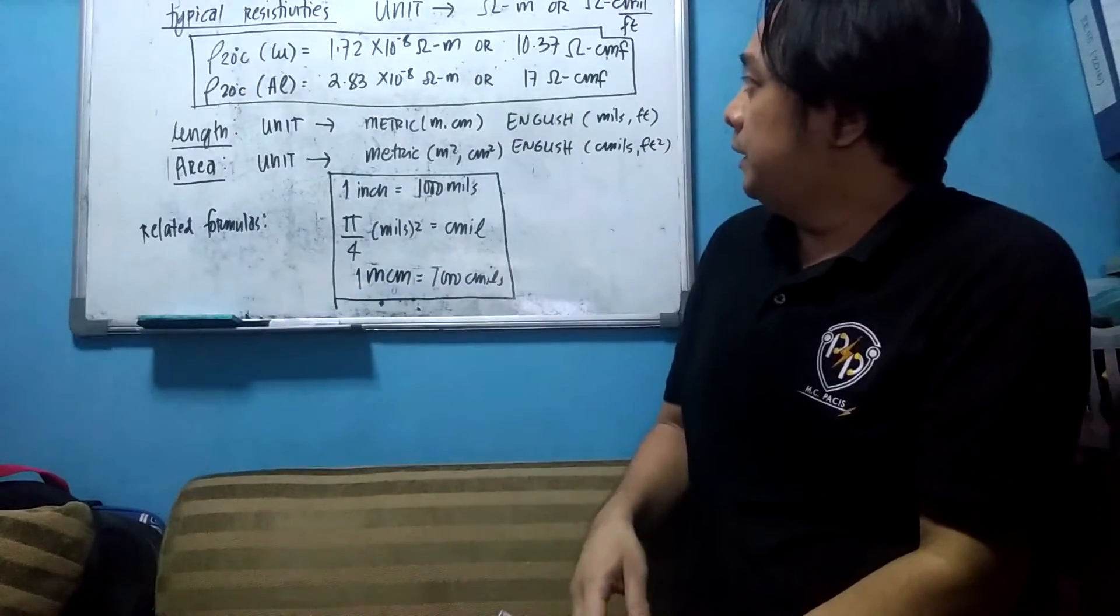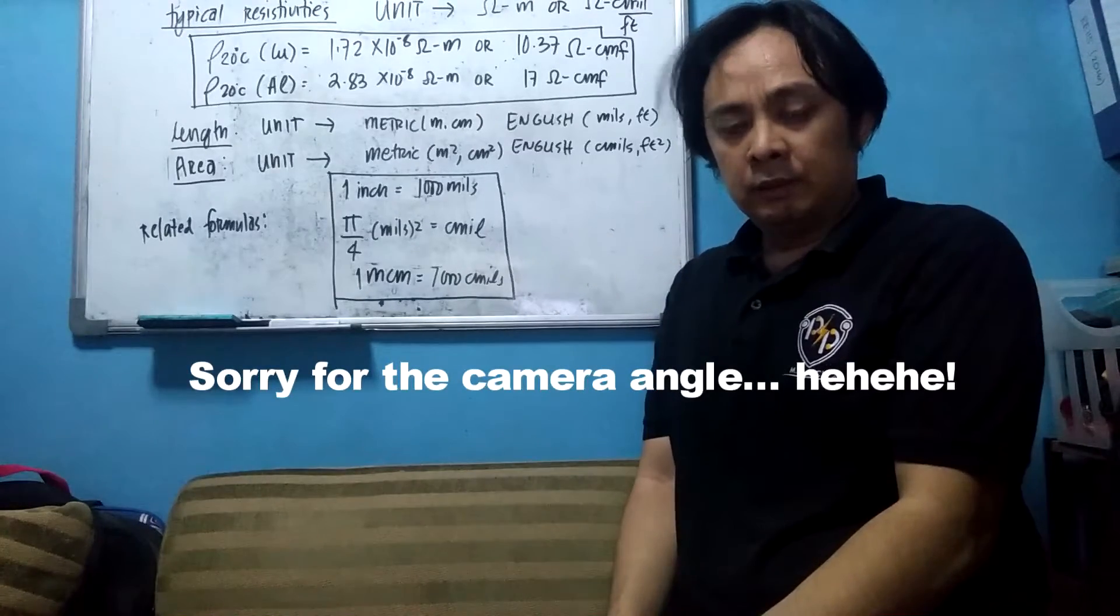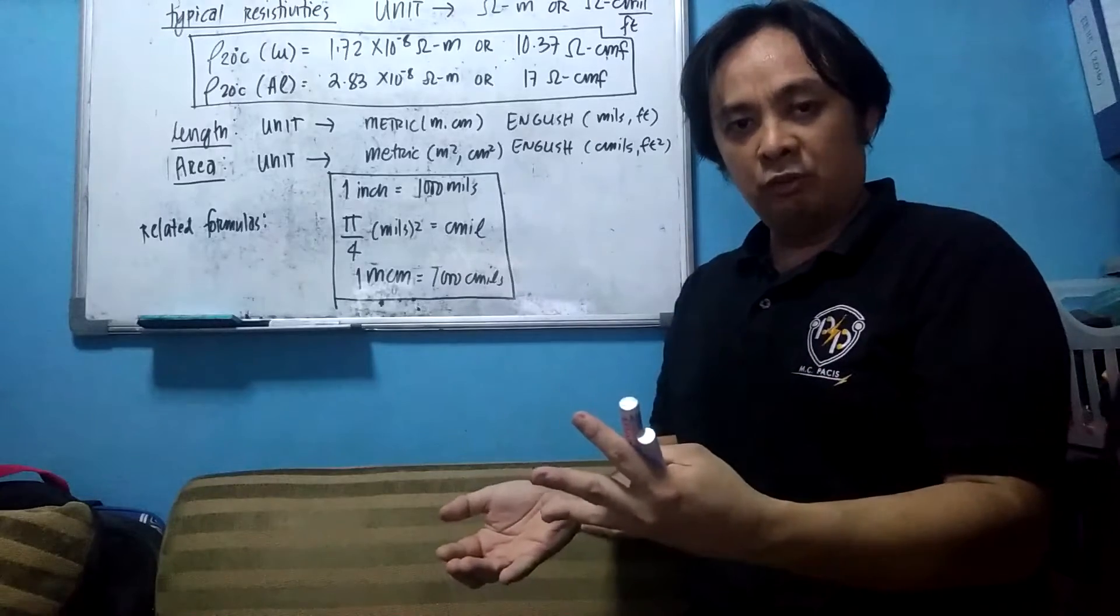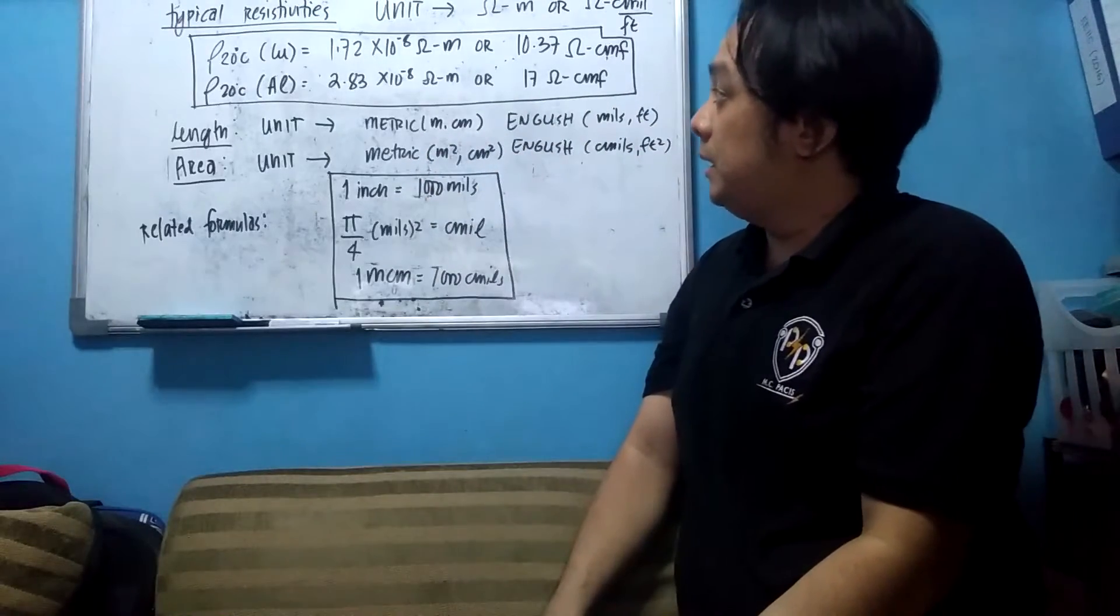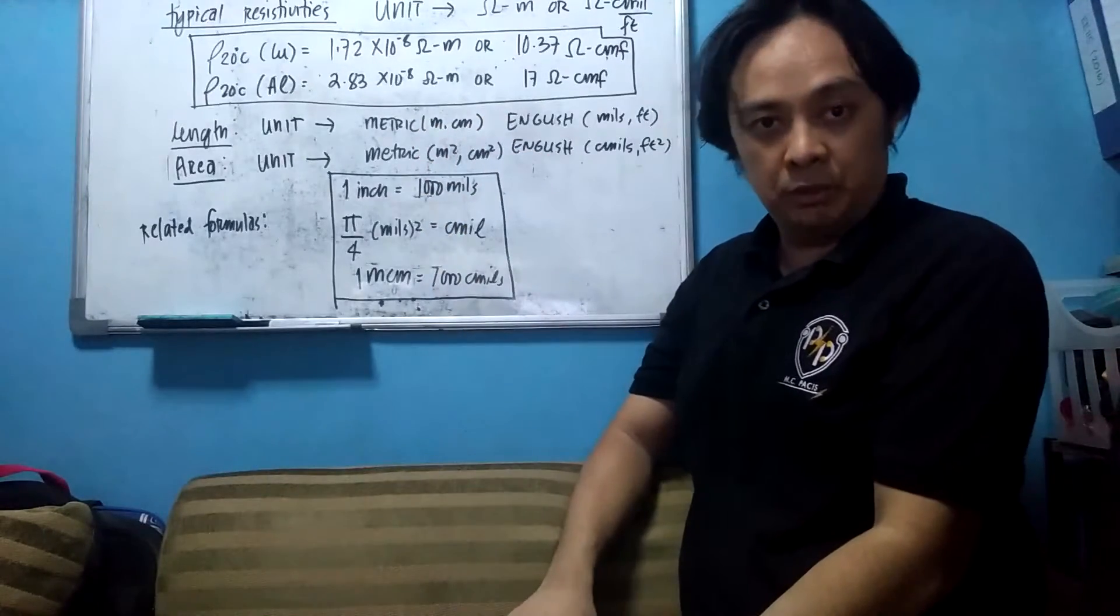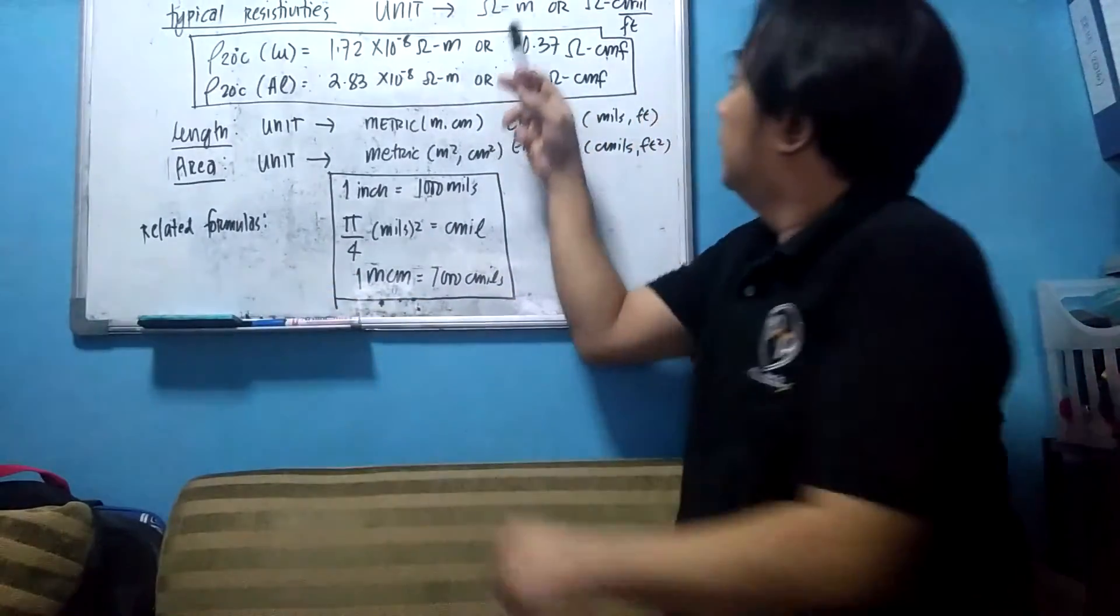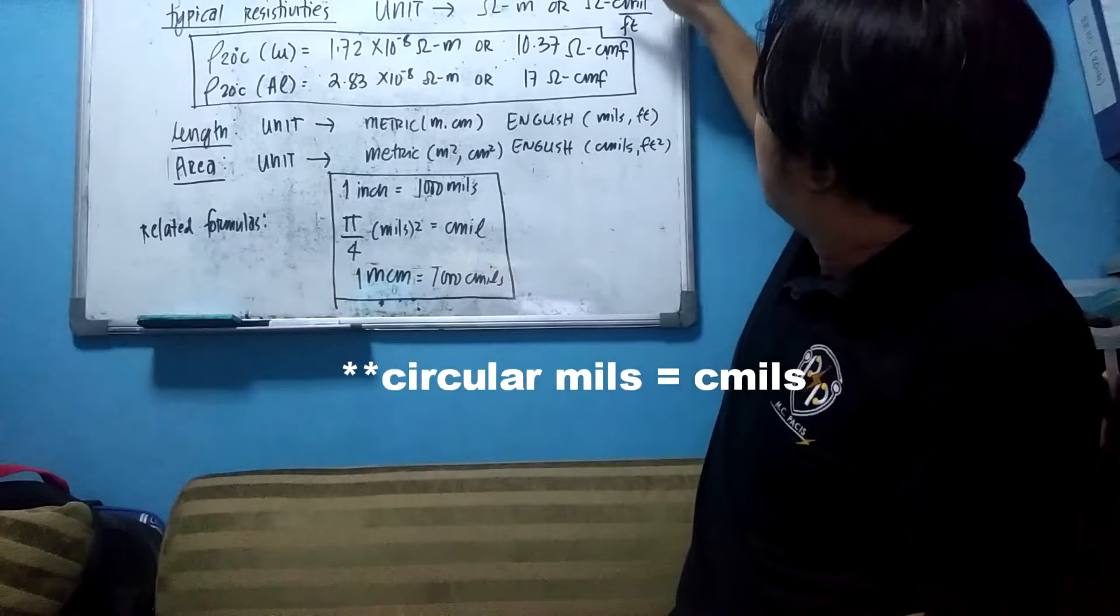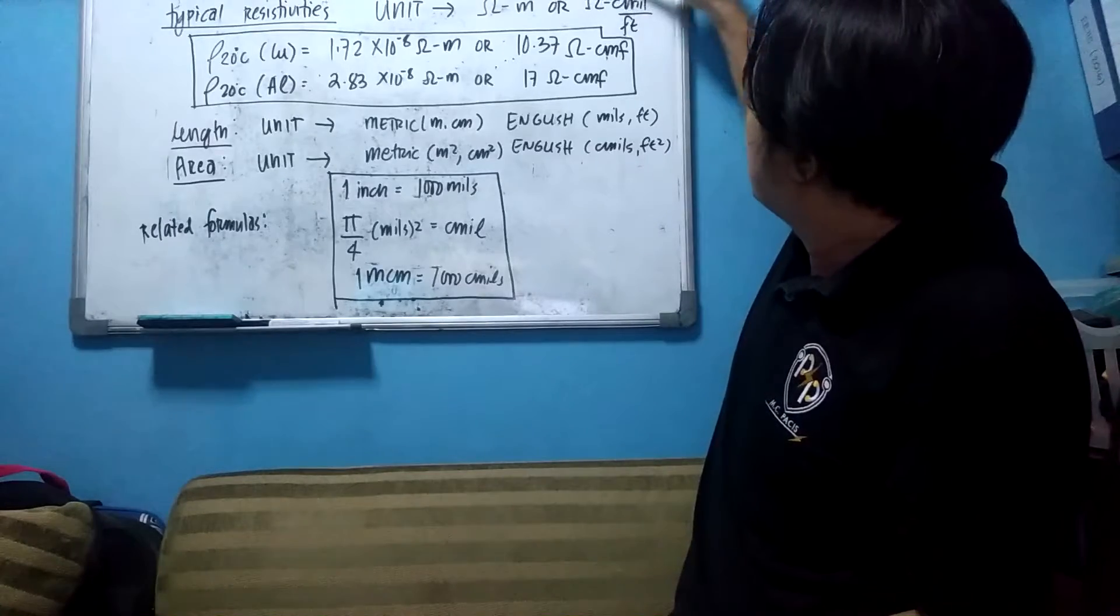Now we will discuss the resistivity, the typical resistivity of different types of materials and the length units as well as the area units that constitutes for the formula of RDC or DC resistance. First, we need to know the typical resistivity of typical conductors. These are the conductors used on transmission lines. So the unit can be ohm meter or ohm dash meter or ohm circular mill. C mill here means circular mills.